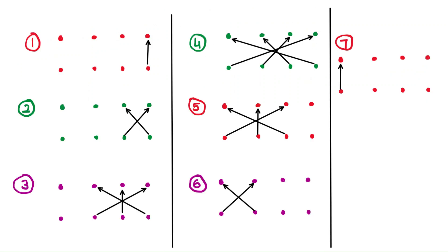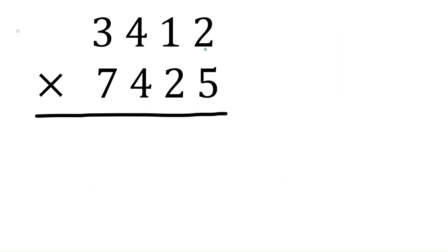In the first step we need to multiply the ones place — that means two and five — which gives ten. Write the last digit, zero, in the answer. One is the carryover.